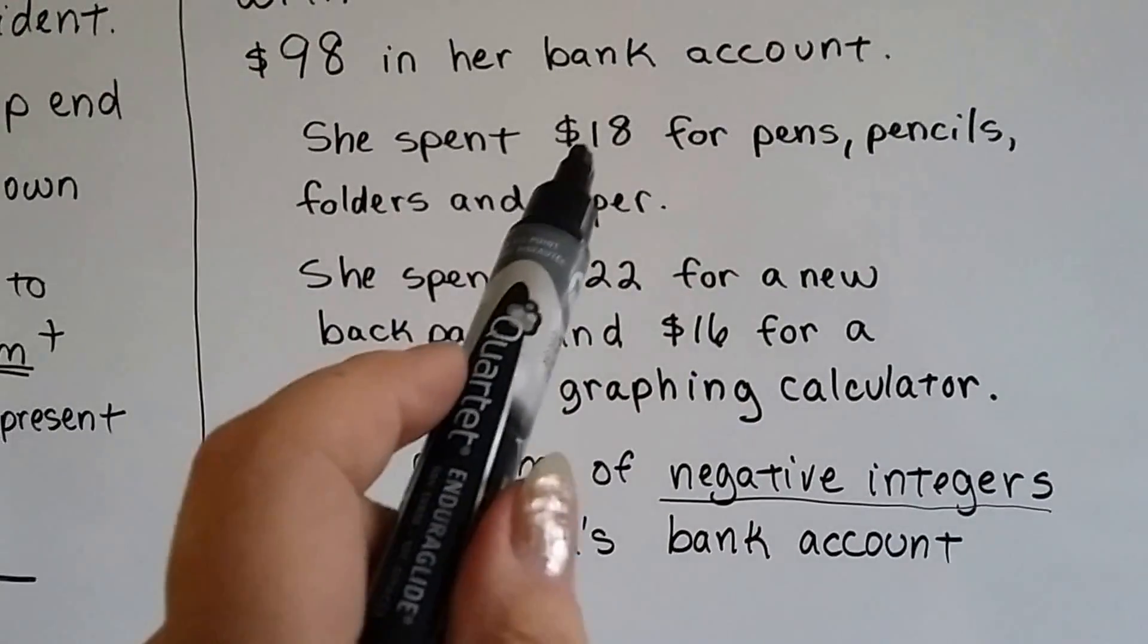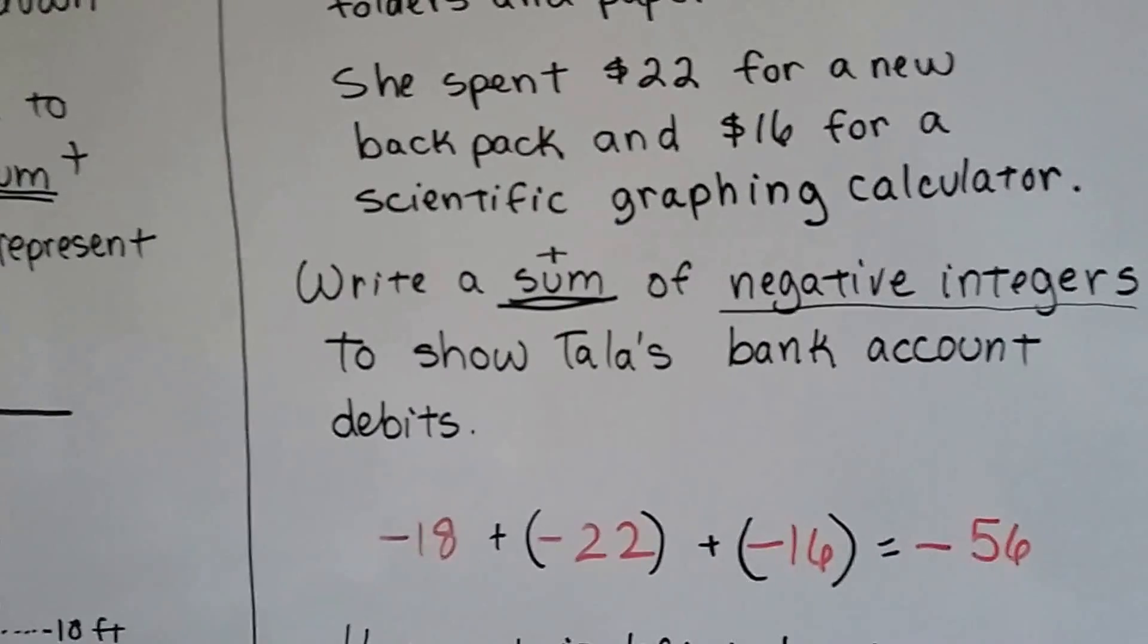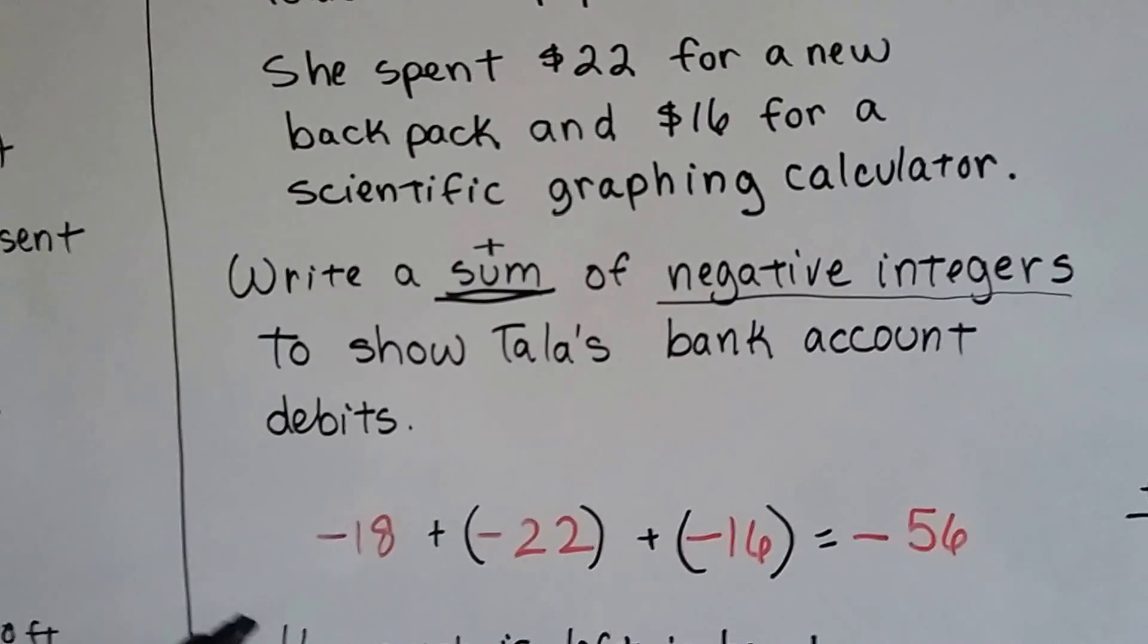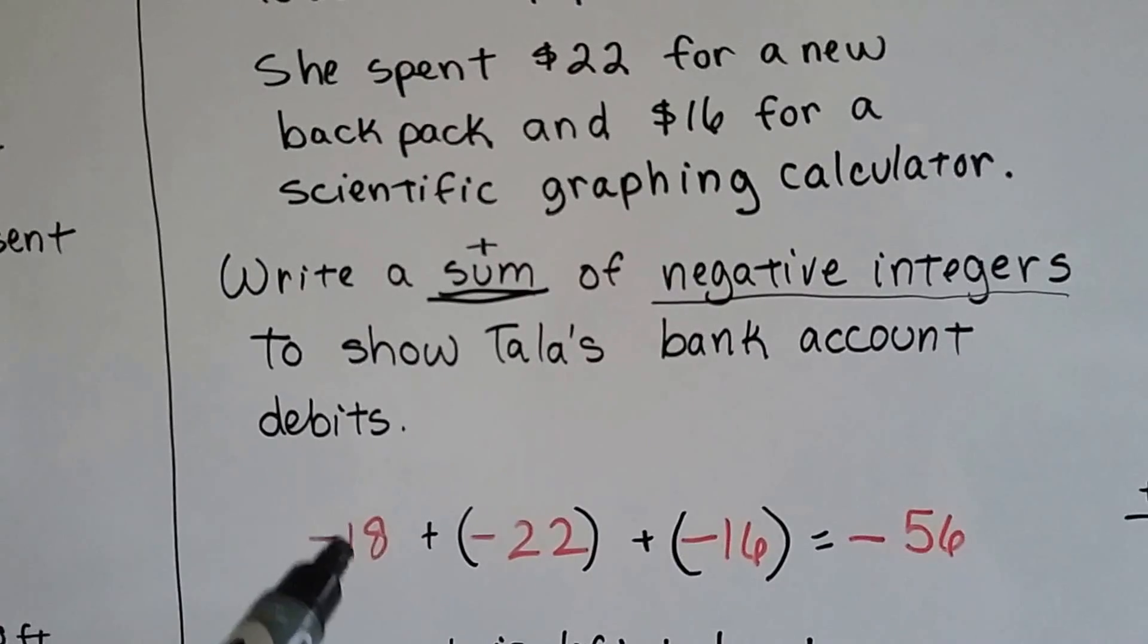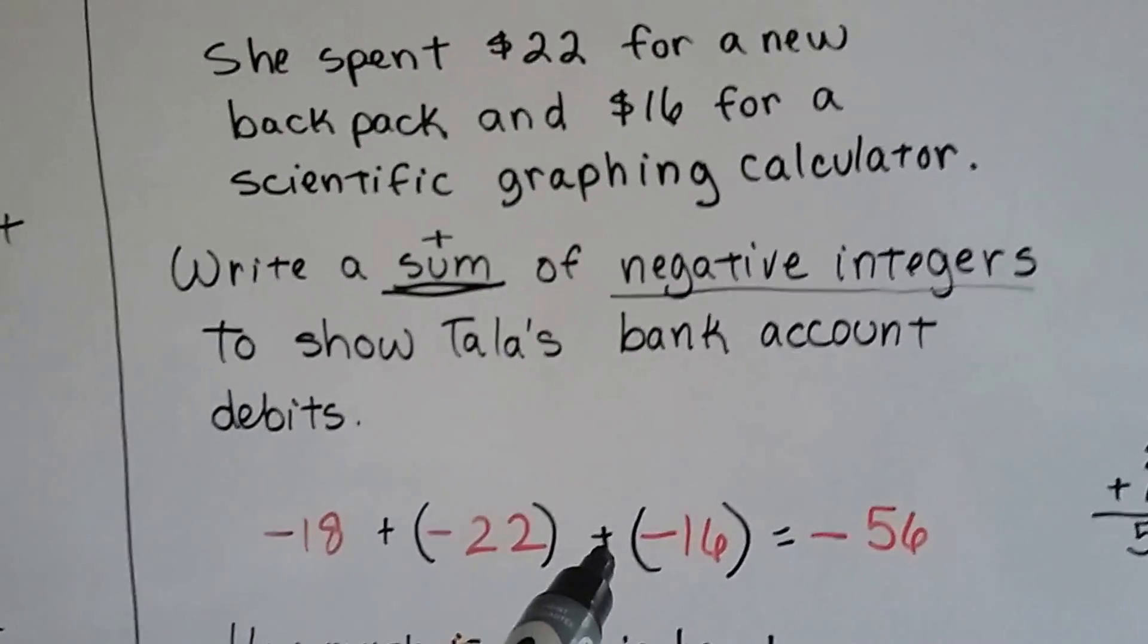Well, it says she spent $18, $22, $16. So that's money spent. That's negative coming out of her account. Okay? It's being deducted from her account. So she spent $18, $22, and $16. We put plus signs in between them.